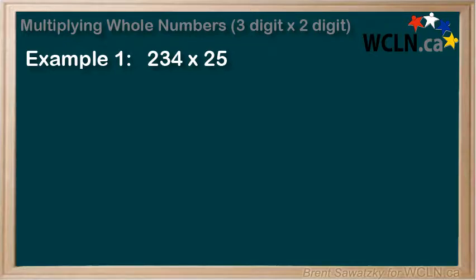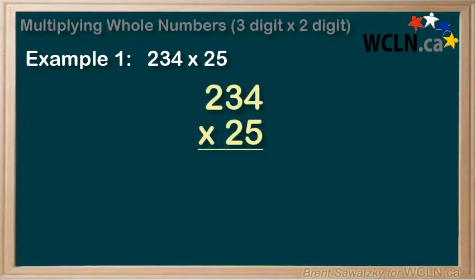Let's multiply some even larger numbers. Example 1: 234 times 25, a 3-digit number times a 2-digit number. Let's line it up. Now we have two numbers on the bottom, but we start the same way we did before. We'll start with the 5 on the bottom and multiply it by each digit on the top, from right to left.